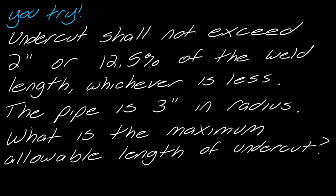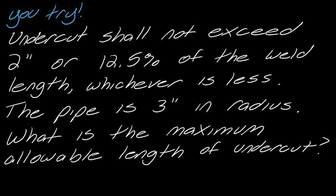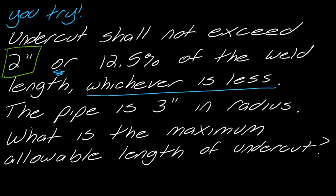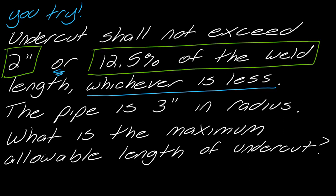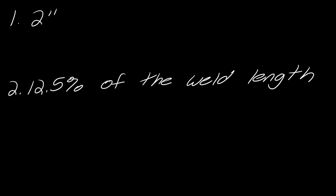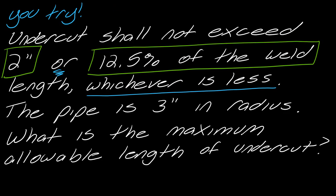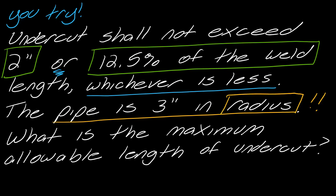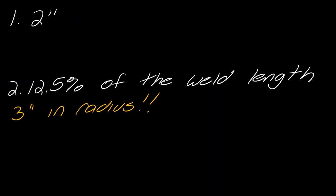Now you try. Stay organized, and when you think you're done, reread the problem to check if you've actually finished. Pause, work it out, then hit play. The comparison is signaled by 'whichever is less' and the word 'or': undercut shall not exceed two inches or twelve-point-five percent of the weld length. Rereading for the weld length — the pipe is three inches in radius, not diameter.